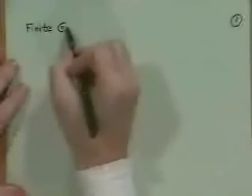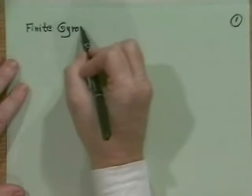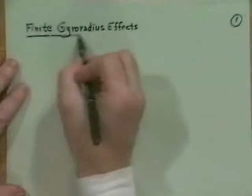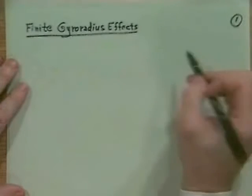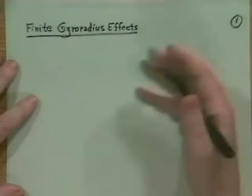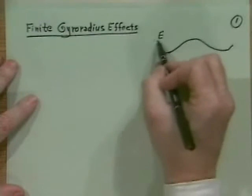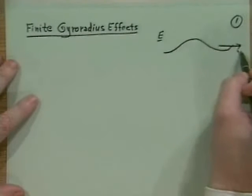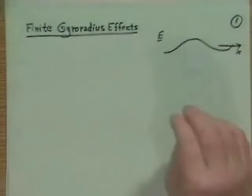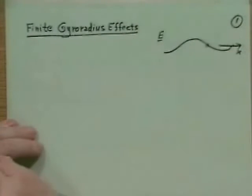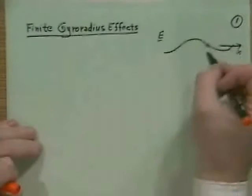Phenomenologically, suppose I have an electric field E as a function of x that looks like a wave, and my gyro radius is small — so small I can barely see it — then I get the local electric field.